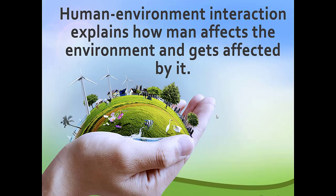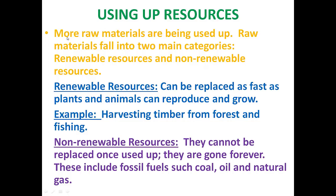As we studied in a past session, human and environment interaction explains how man affects the environment and gets affected by it. With increasing population, more raw materials are being used up. Raw materials fall into two main categories: renewable resources and non-renewable resources. Renewable resources can be replaced as fast as plants and animals can reproduce and grow. Examples include harvesting of timber from forests and fishing.